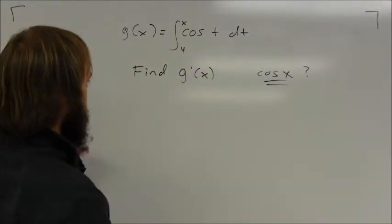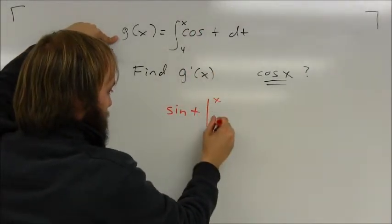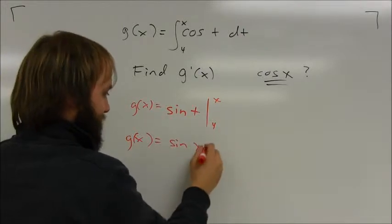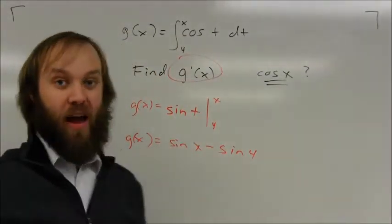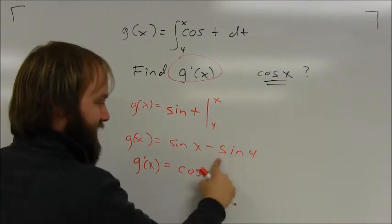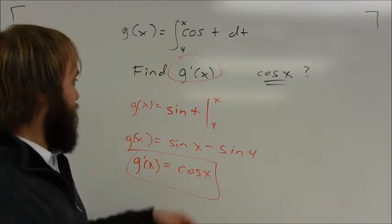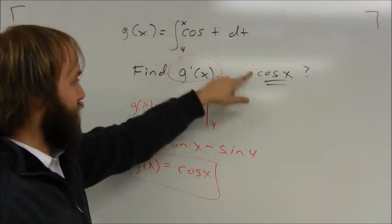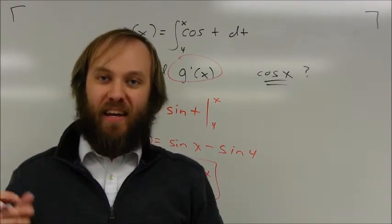Going through the process: the antiderivative of cosine(t) is sine(t), evaluated between x and 4. So g(x) = sine(x) − sine(4). I wasn't trying to find g(x) — I just wrote g in a different form. Taking the derivative: the derivative of sine(x) is cosine(x), and sine(4) is a constant whose derivative is zero. So g prime = cosine(x). If you take the derivative of an integral, they cancel each other out, and you get the inside function written in terms of your upper-limit variable. That's what the second fundamental theorem of calculus says.